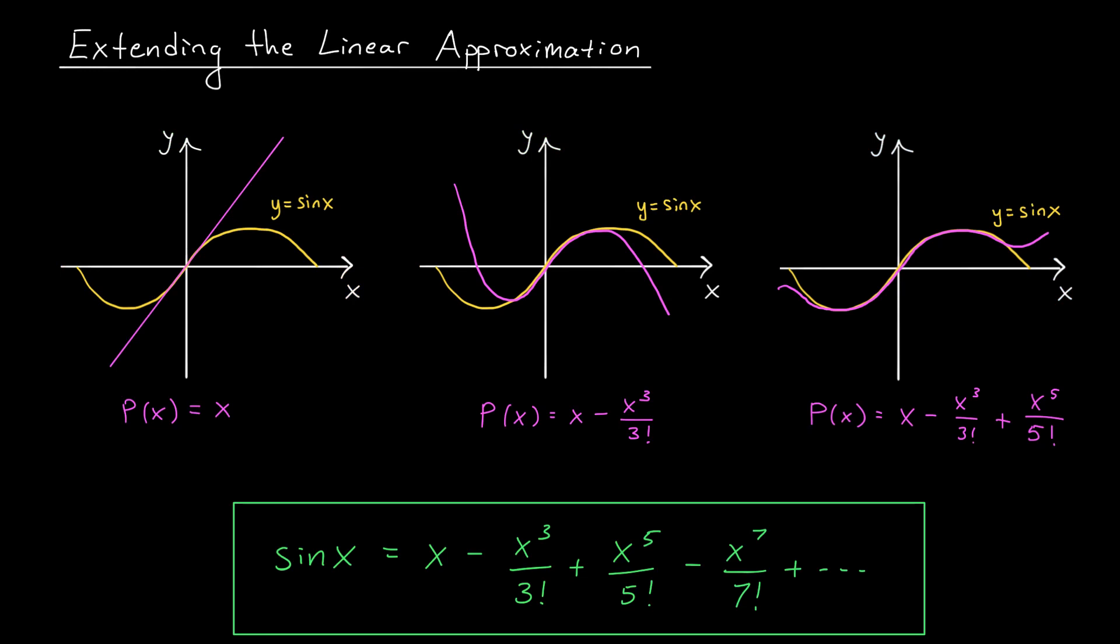So once again, I've included the graph of y equals sine x and the linear approximation p of x equals x. I'm using the letter p here to remind you that we're approximating with a polynomial. Now we can actually improve this linear approximation if we allow the powers of x to increase beyond 1. In my middle graph, I have a polynomial approximation for y equals sine x that's quite a bit better than our linear approximation. But here, I've had to go up to a polynomial of degree 3.